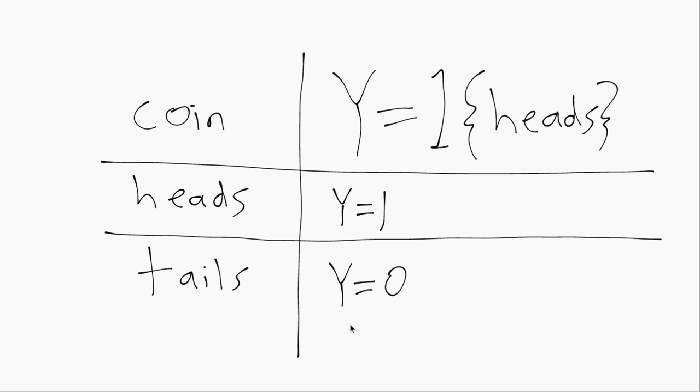There are a lot of different terms for this kind of variable. You could call it a binary variable, which technically means two possible values, but by default means zero and one. Sometimes people would call Y a Bernoulli random variable or an indicator variable.